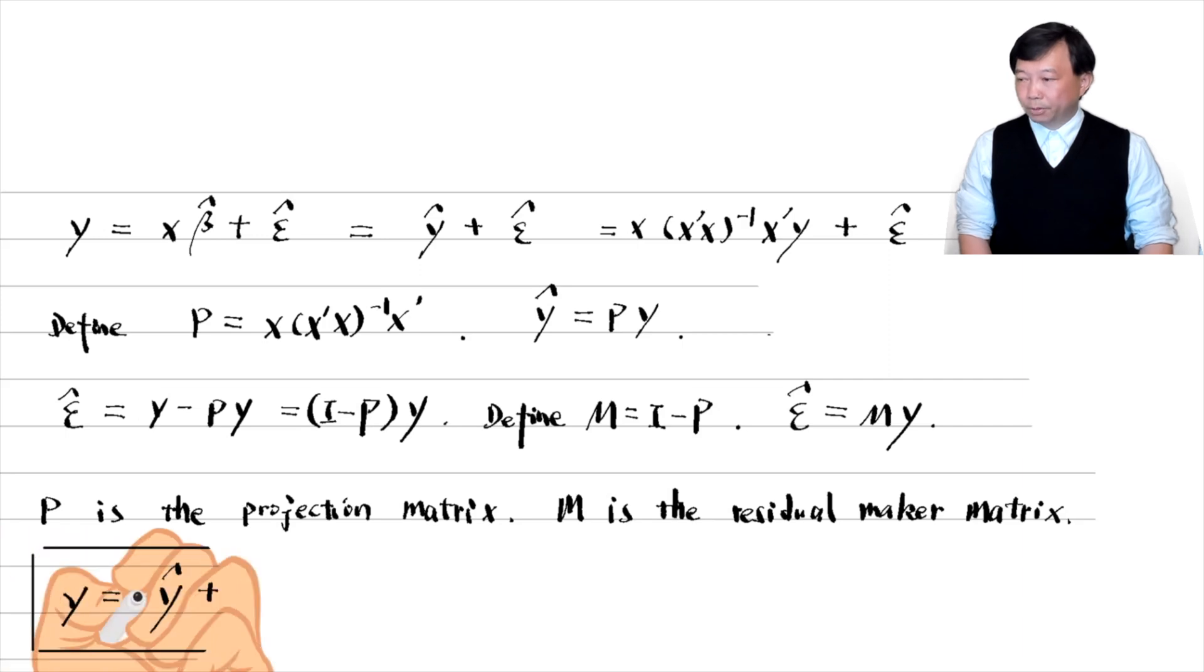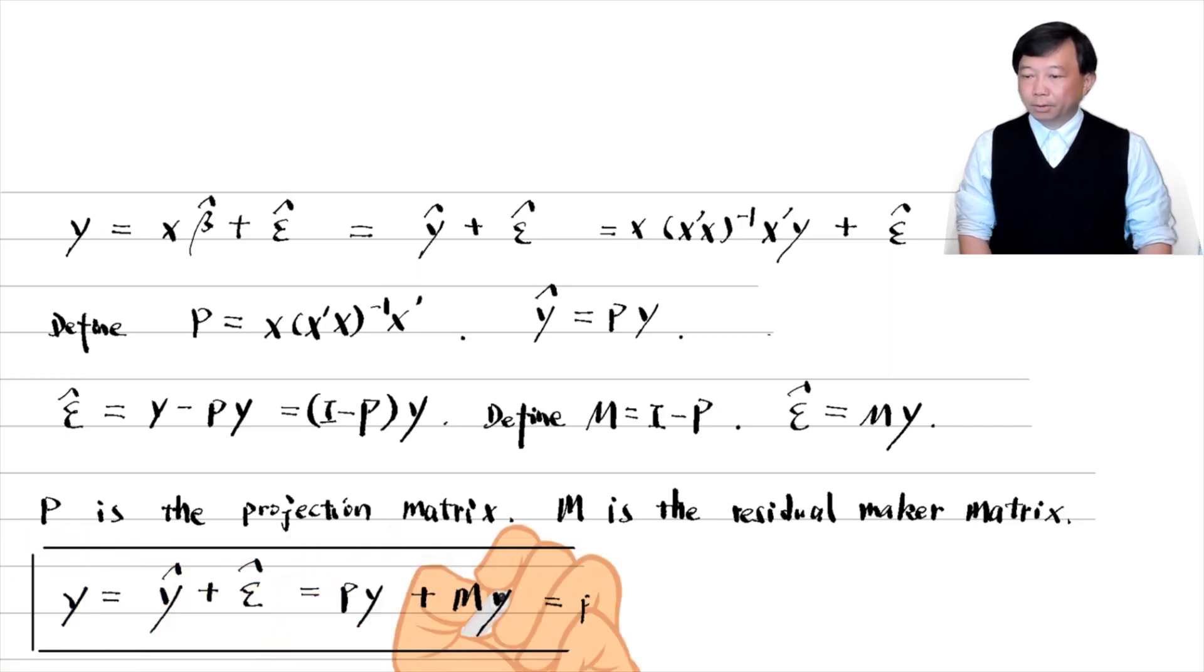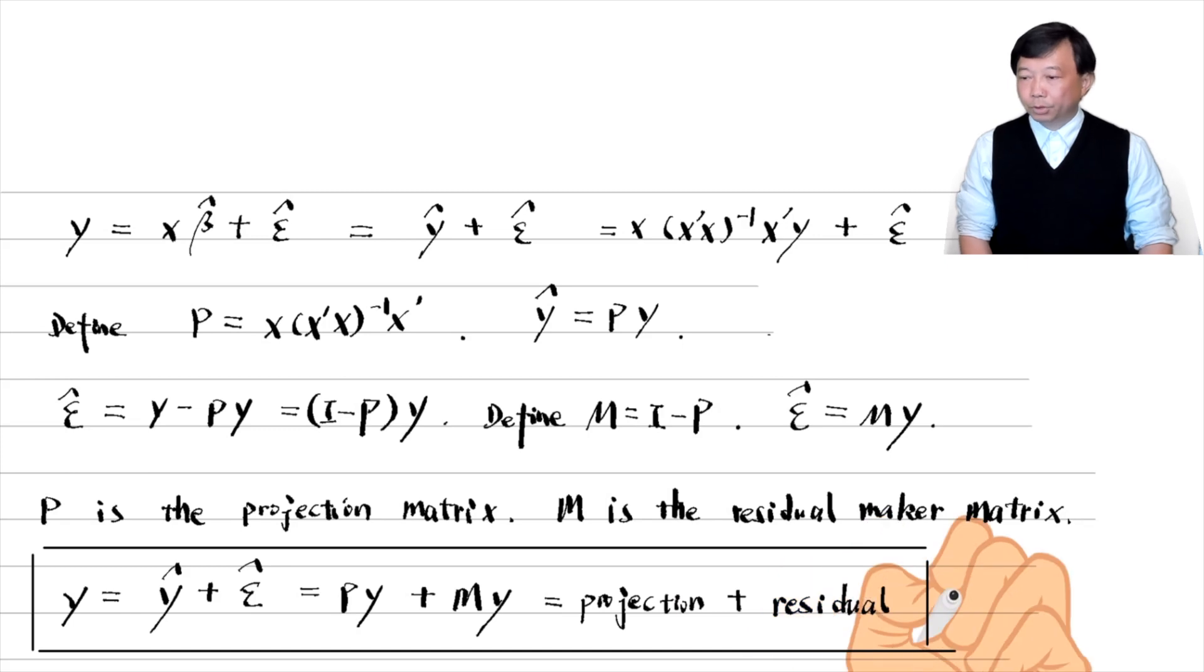We can express the regression model as the sum of projection and residuals using the projection matrix and the residual maker matrix.